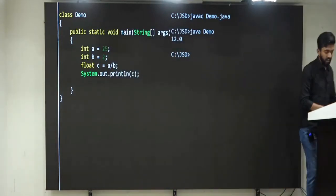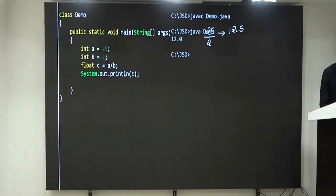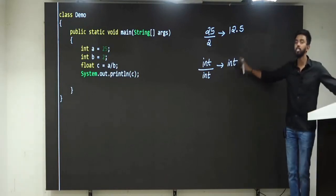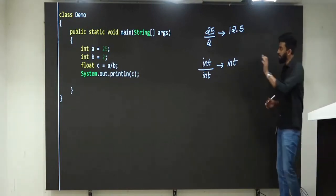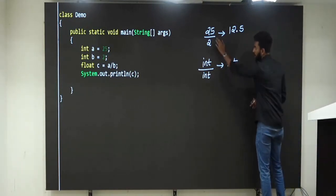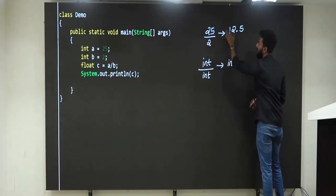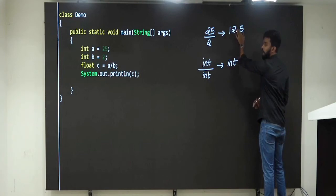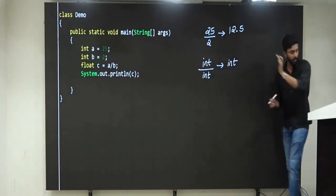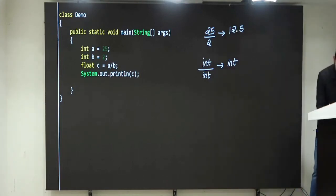In Java, whenever you perform an integer divided by another integer, the answer is always another integer. If this is true, then 25 is an integer, 2 is an integer, and hence the result will not be 12.5, it will be 12, and this 0.5 will be removed.